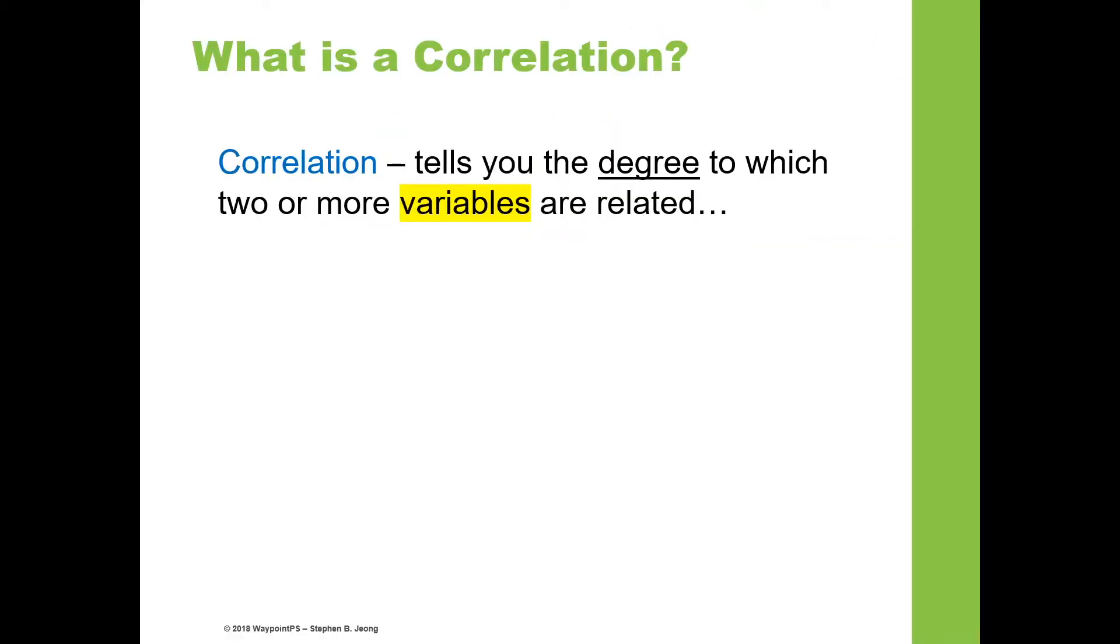Correlation, in a nutshell, tells you the degree to which two or more variables are related. Sometimes people call them factors, but I call them variables here.